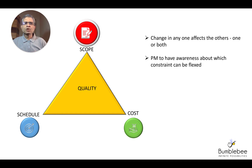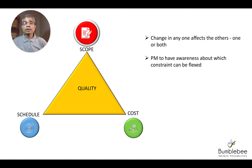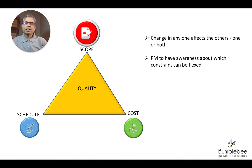The PM also needs to be aware of which of these constraints can be flexed, keeping in view the customer's expectations. For example, if you are working on a deadline-driven project — such as a project linked to a sports event like the Olympics or the football World Cup — you cannot allow the deadline to slip because there is a fixed date by which the software has to be delivered. Similarly, there could be a government project or a non-governmental organization project with a fixed budget based on a grant, in which case the cost becomes the constraining element.